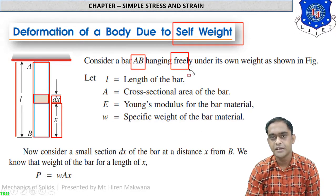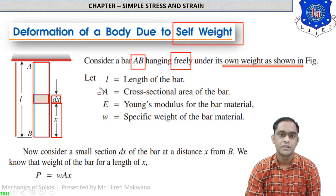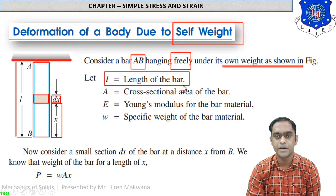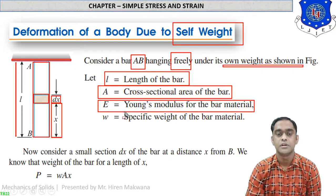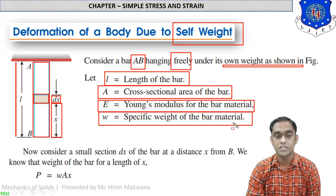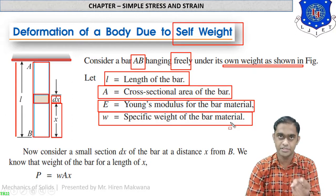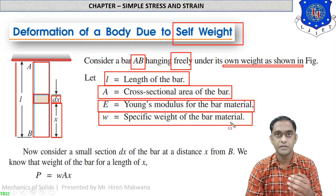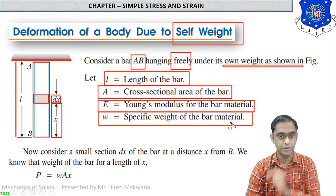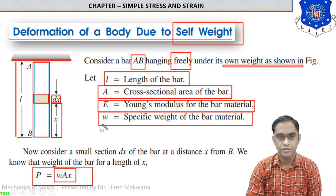Consider a bar AB hanging freely under its own weight. Let L = length of the bar, A = cross-sectional area, E = Young's modulus (modulus of elasticity), and w = specific weight of the bar material. Specific weight means weight per unit cross-sectional area per unit length. So if the cross-section is 1 m², the weight is w; if 2 m², it is 2w. Therefore total weight of a portion = w × A × x.